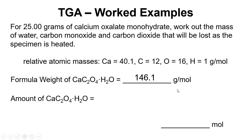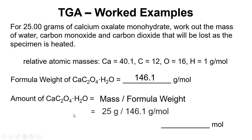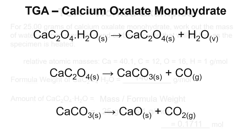The next step is to work out the amount, and amount is mass over the formula weight. So we have 25 grams divided by 146.1, giving us 0.1711 moles. Now we know the amount of calcium oxalate monohydrate that we're starting off with.